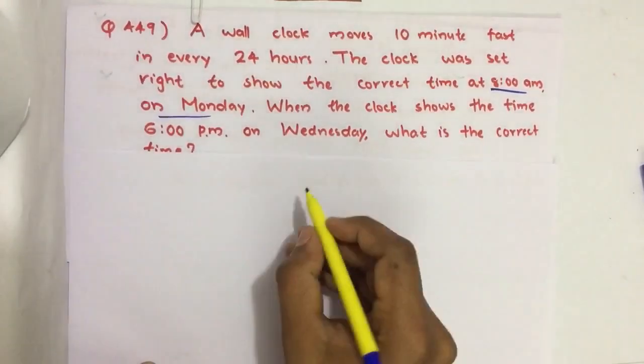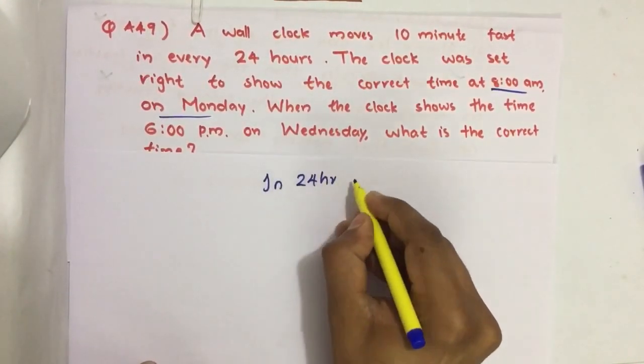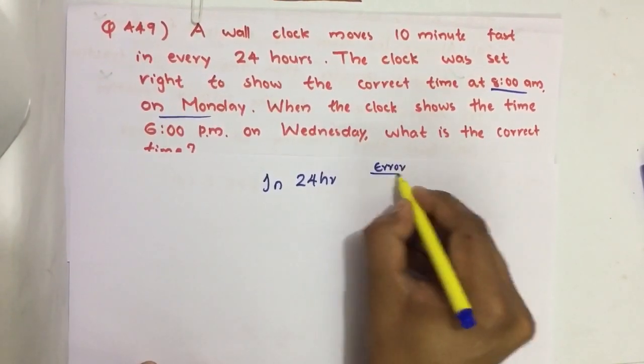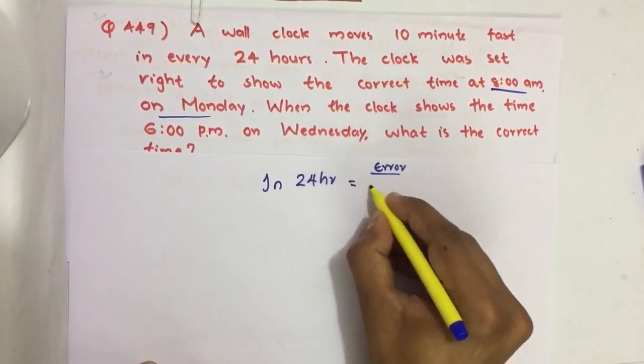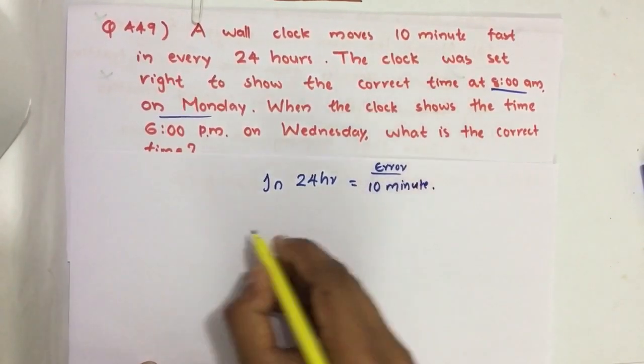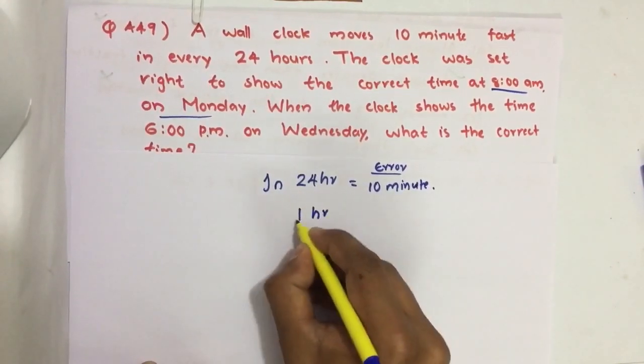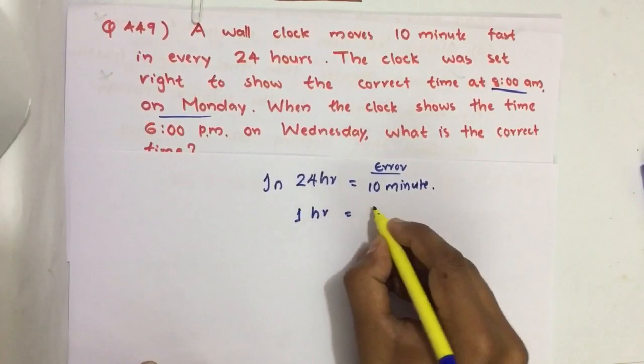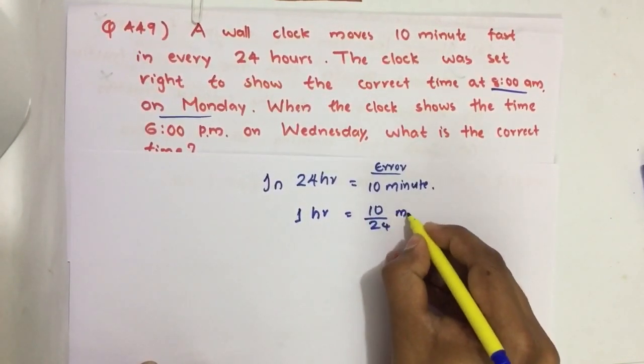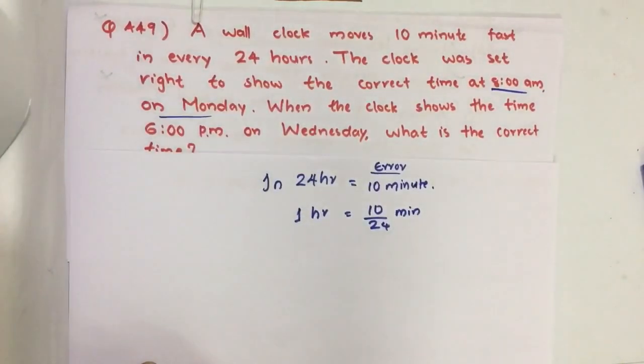It is given that in 24 hours error equals 10 minutes. Therefore for one hour, error equals 10 divided by 24, taking this 24 here, 10 by 24 minutes. In each hour there will be 10 by 24 minutes error.